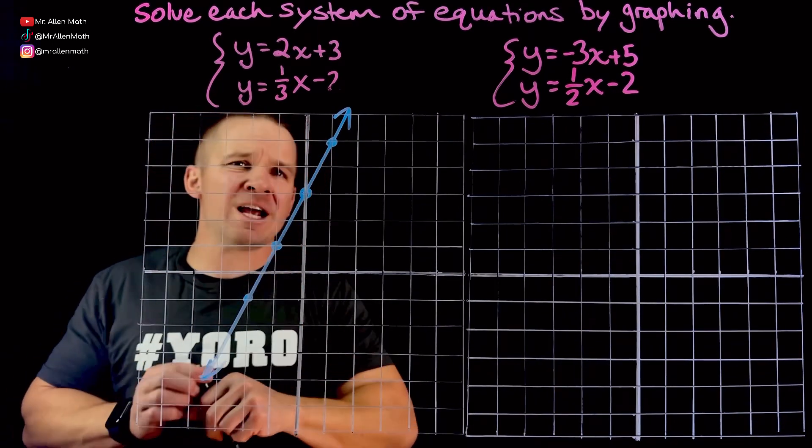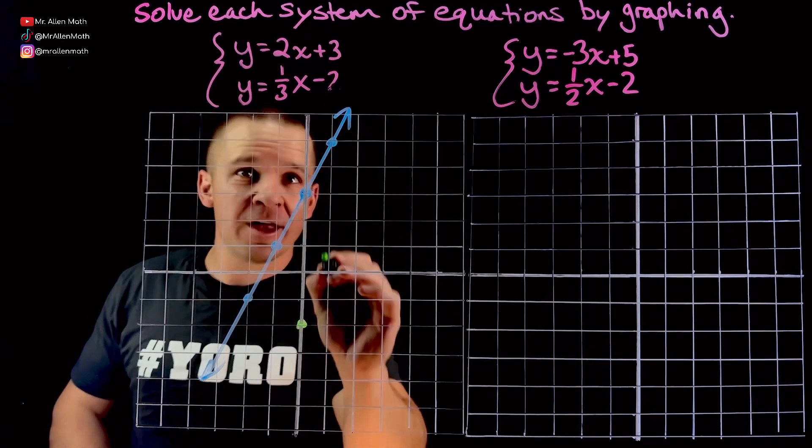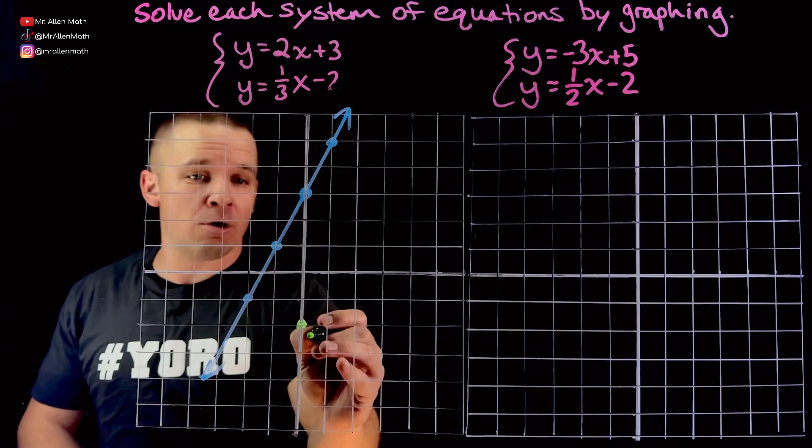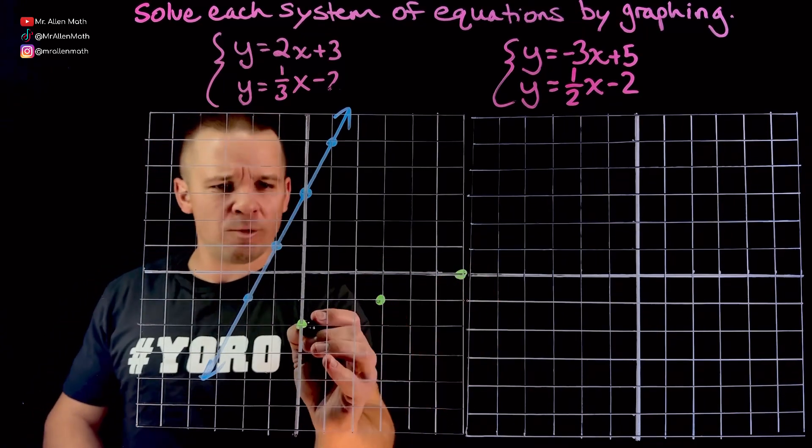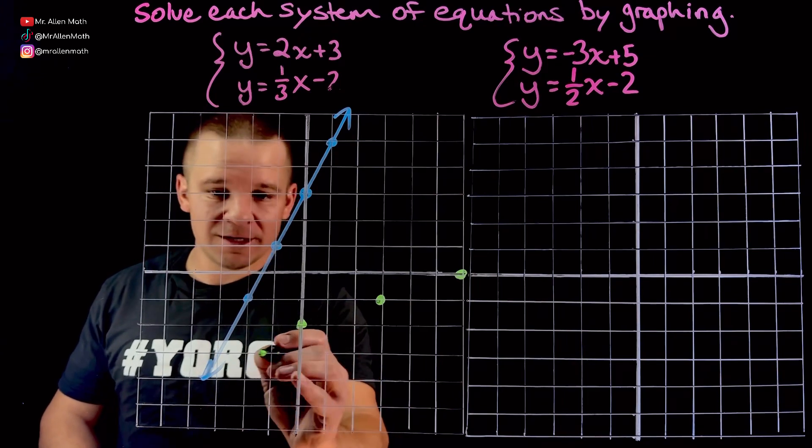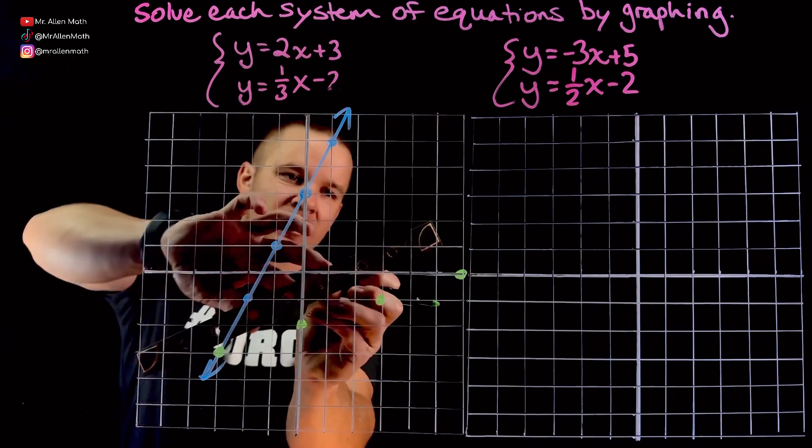All right, let's do this one in green here. So we've got a y-intercept of negative 2, so down 2 here, and then I've got one-third for my slope. So I'm going to go up 1 over 3. Up 1 over 3. Hmm, these aren't connecting, but wait. Let's go down 1 to the left 3, and there we go. That would be our point of intersection there.